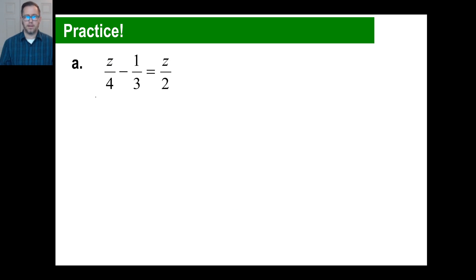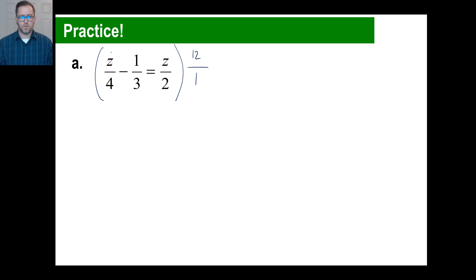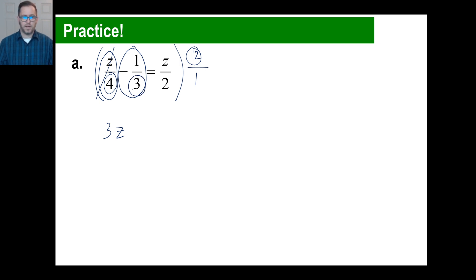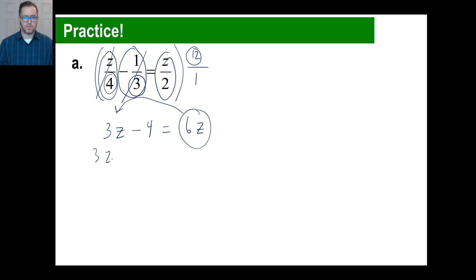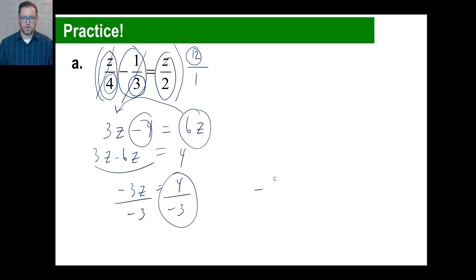Try practice problem A. I'm using 12 as my common denominator. Multiplying by 12 and dividing by 4 means multiplying by 3 — so 3 times z is 3z. Next, multiplying by 12 and dividing by 3 means multiplying by 4 — negative 1 times 4 is negative 4. On the right, multiplying by 12 and dividing by 2 means multiplying by 6 — so 6 times z is 6z. Move 6z over: 3z minus 6z is negative 3z. Move the negative 4 over, it becomes positive 4. So negative 3z equals 4, divide by negative 3 — z equals negative 4 over 3.